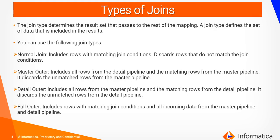The types of joins offered by IICS are as follows. The join type determines the result set that passes to the rest of the mapping and defines the set of data included in the result. You can use the following join types in the mapping. The first one is the normal join, which includes rows with matching join conditions and discards rows that do not match the join condition.